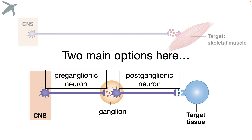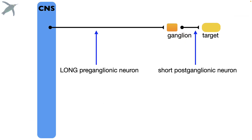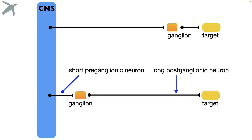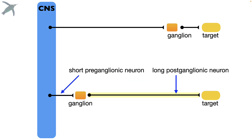There are two main options depending on where the ganglion is in the body. Option one: if the ganglion is close to the target, the preganglionic neuron is long and the postganglionic neuron is short. However, if the ganglion is close to the spinal cord, the preganglionic neuron is short but the postganglionic neuron is long. It just depends on where the ganglia are actually located.